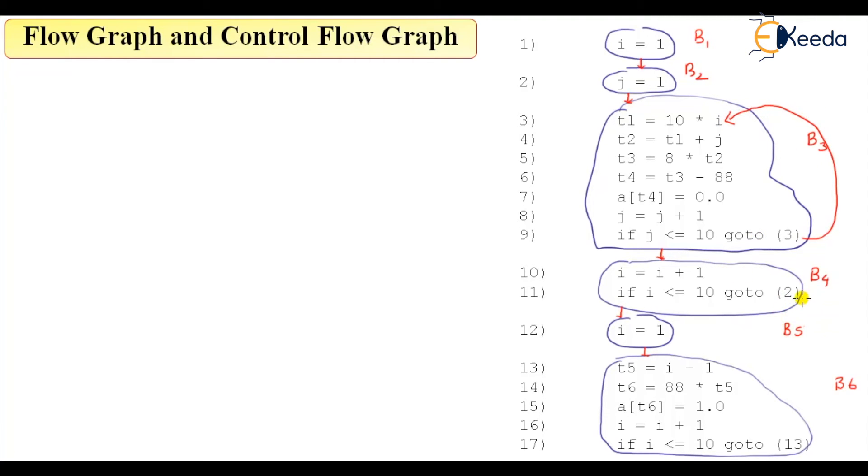like this. Then there is a go to two, so there will be an edge that is originating from this and terminating over here. Finally, there will be an edge from 13 to 13, from 17 to that way this one. Okay.